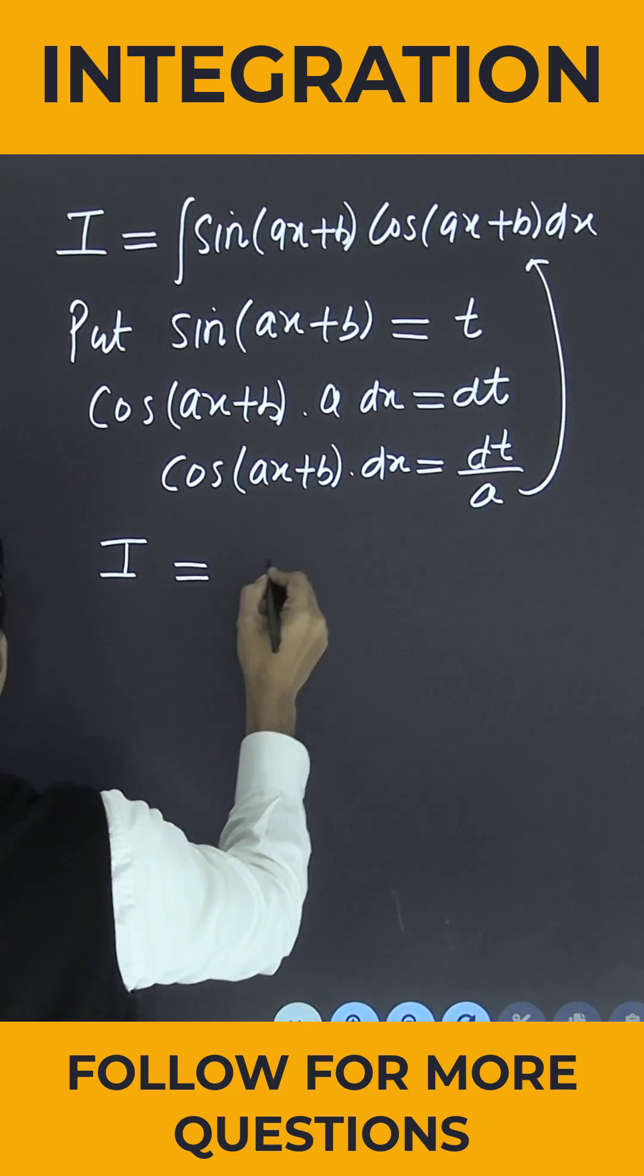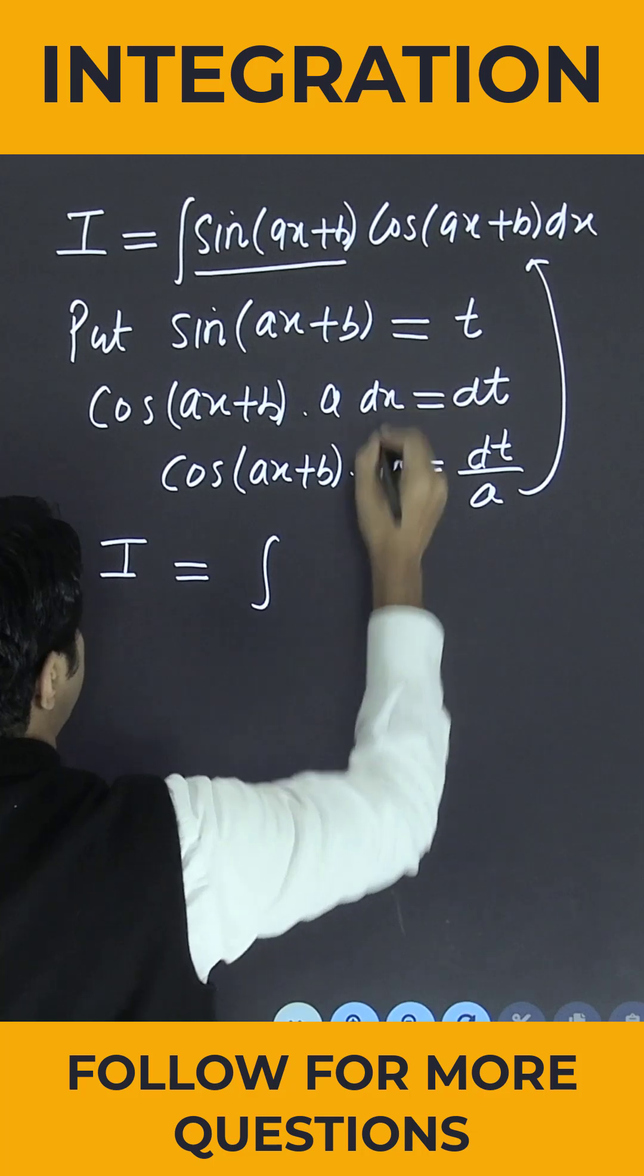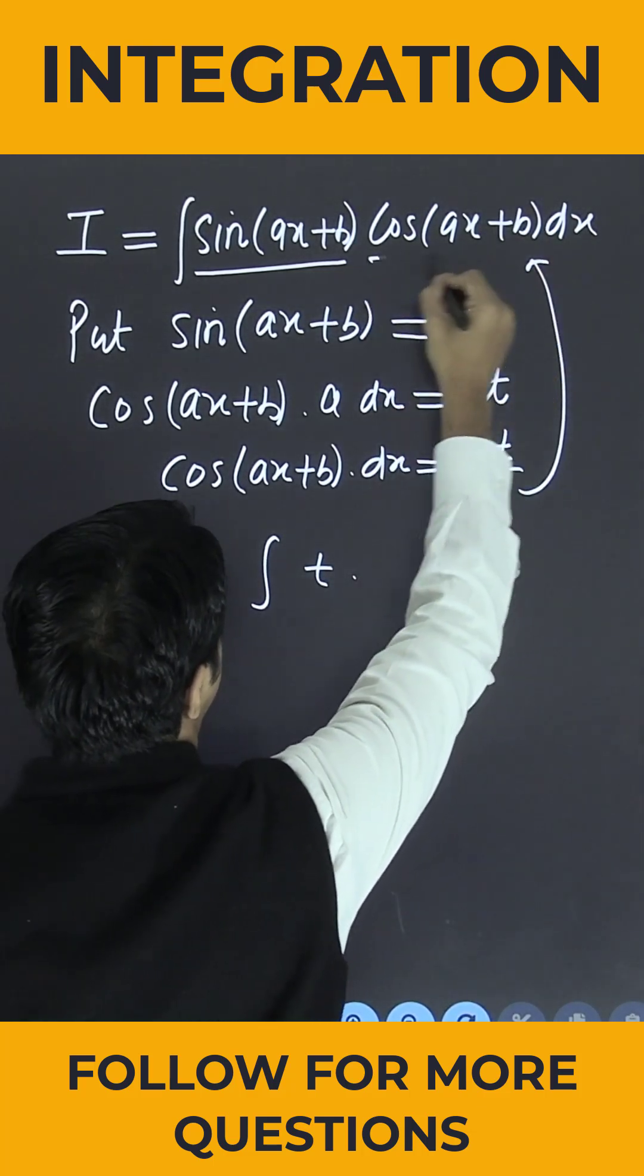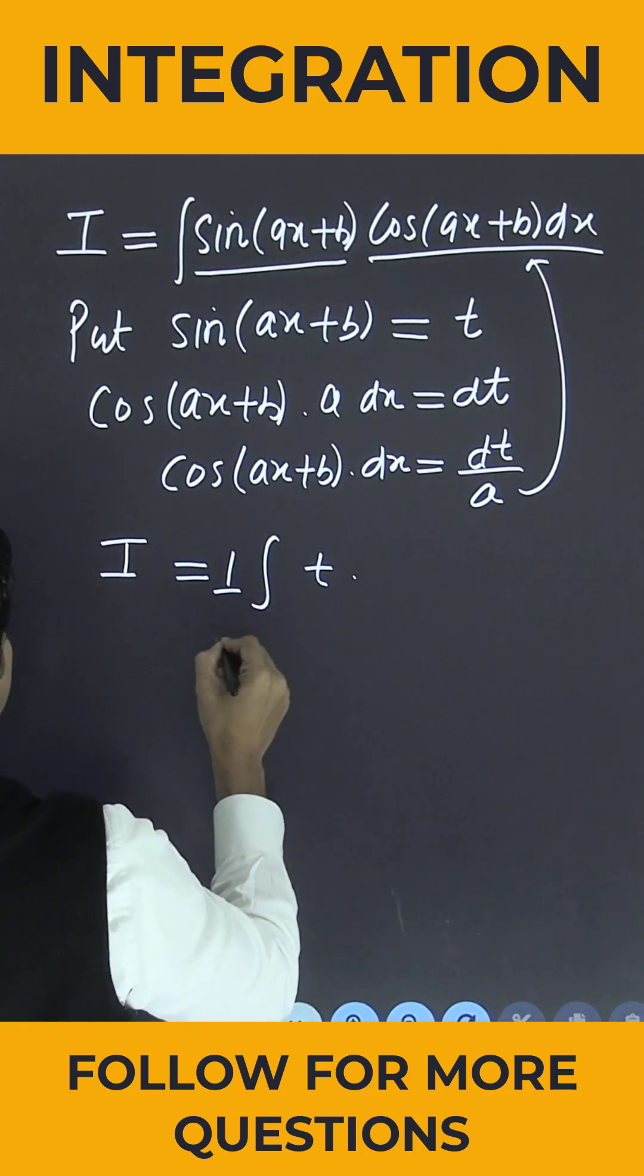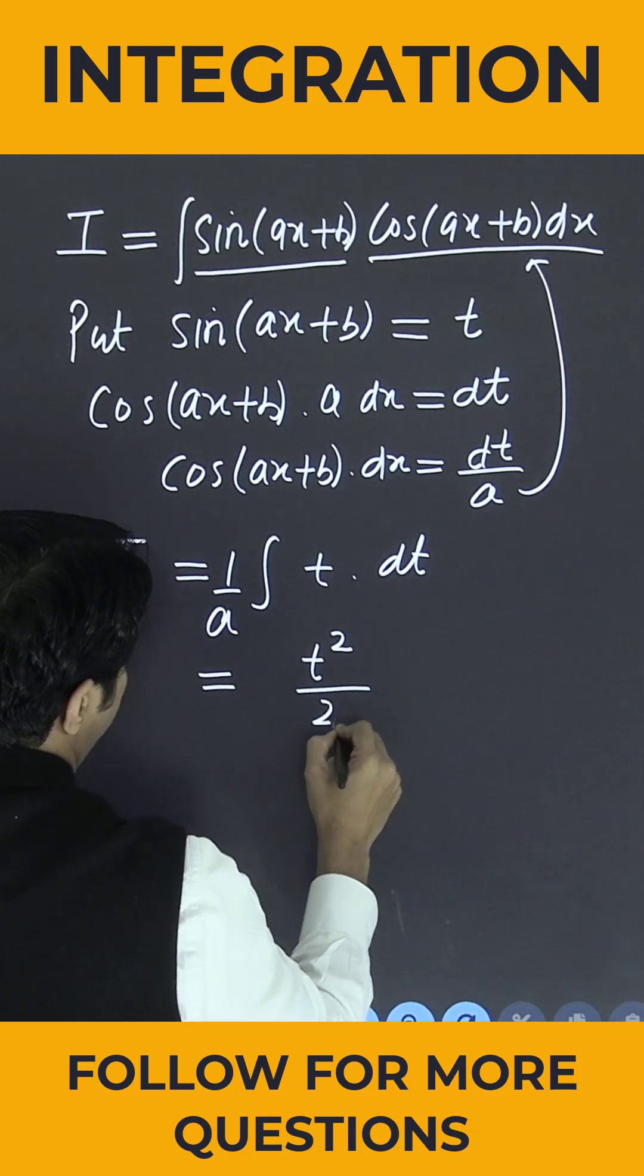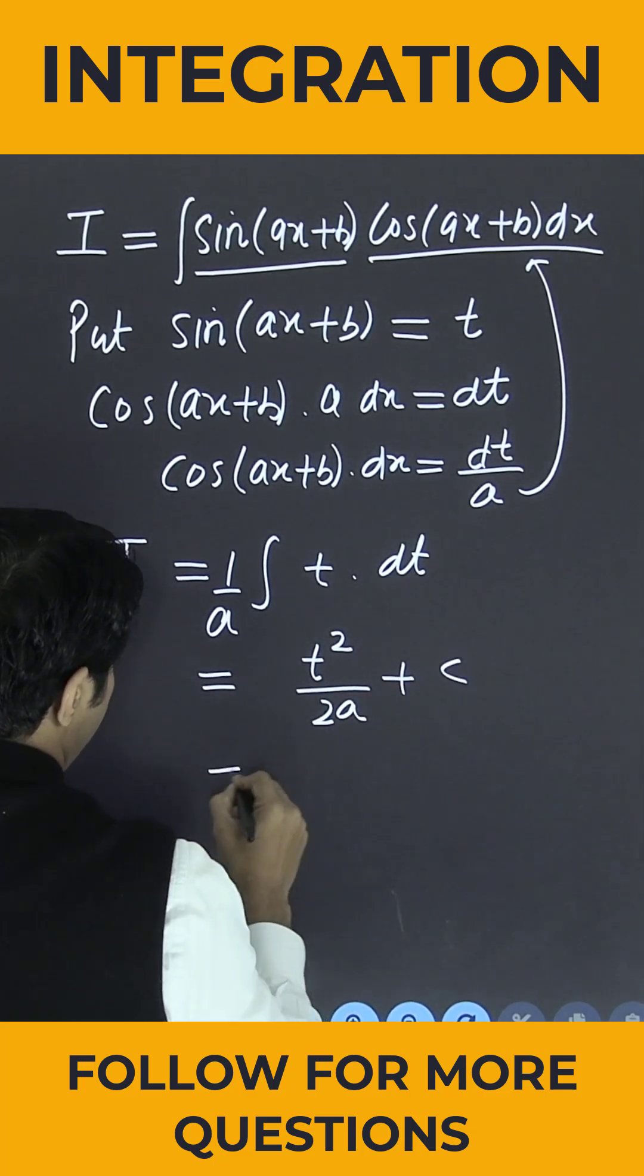So capital I equals integration of t times dt by a. 1 by a is outside, so integral of t dt equals t squared divided by 2a plus c.